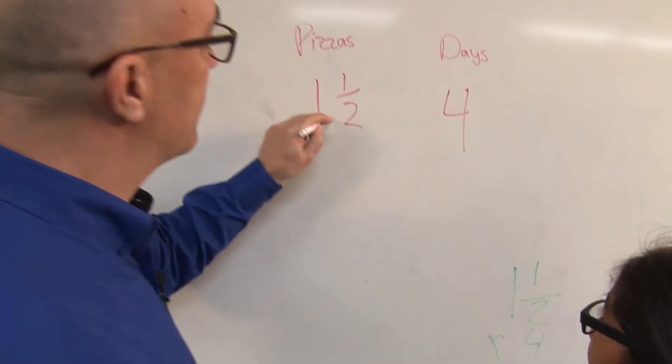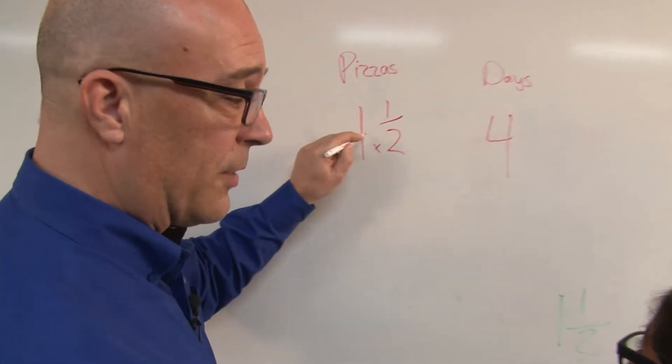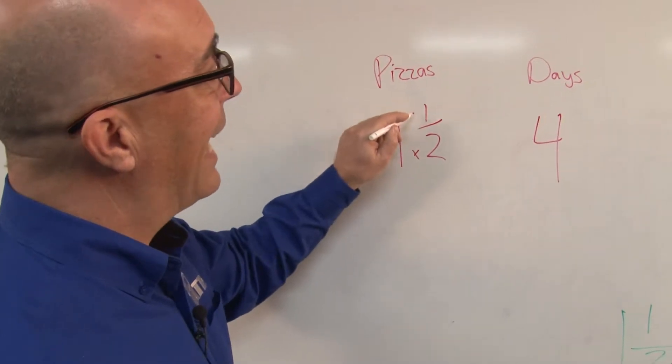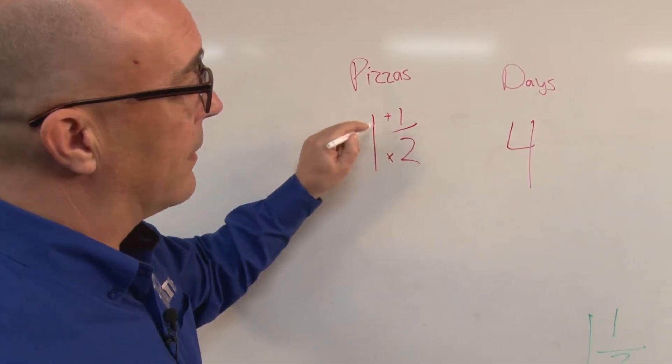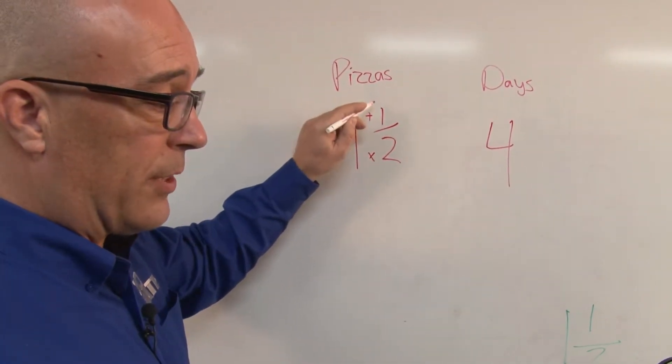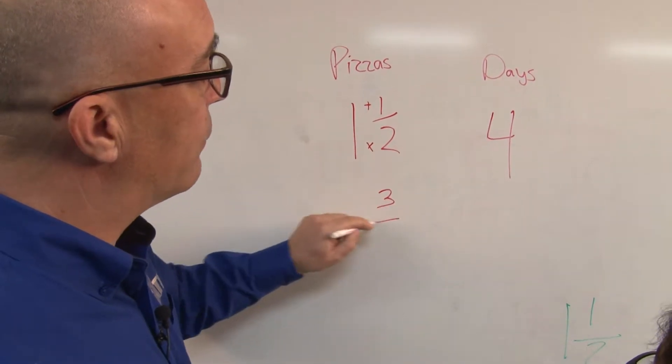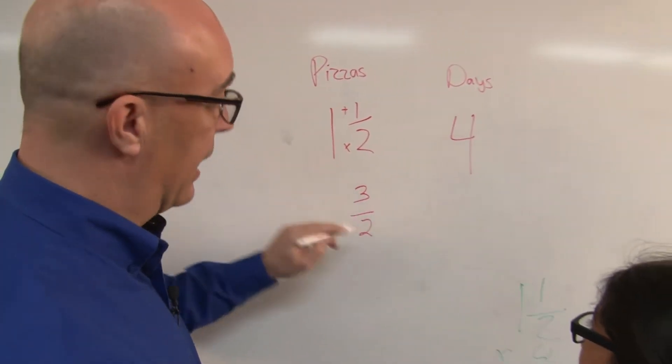So we're going to multiply this. 2 times 1 is what? 2. And then we're going to add the numerator. So 2 times 1 is 2 plus 1 is? 3. 3. So 3 over 2 is the same as 1 and a half.